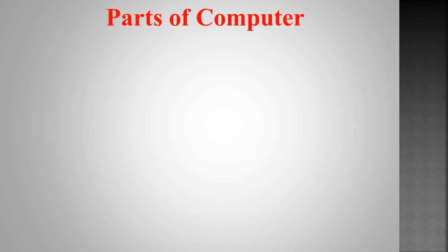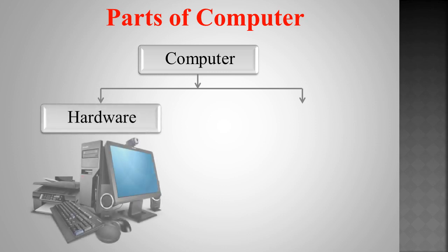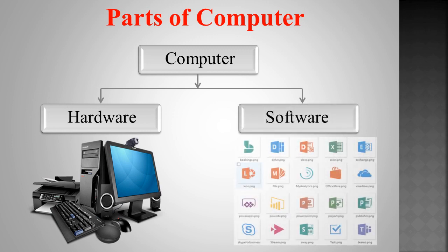Now we will discuss the parts of a computer. A computer system has two main parts which together make it work. The first part is hardware and the second part is software. Hardware includes CPU cabinet, monitor, webcam, speaker, mouse, keyboard, printer, scanner, etc. Software includes MS Office package, Skype, Google, and so on.